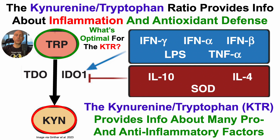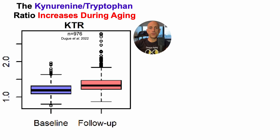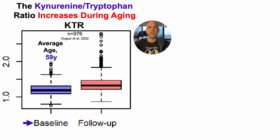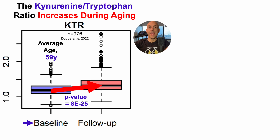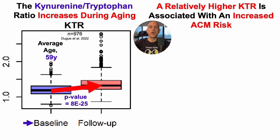With that in mind, what's optimal for the KTR — the kynurenine to tryptophan ratio? This ratio increases during aging. Starting with the baseline visit, this study included people with an average age of 59 years, who then provided blood 11 years later at the follow-up visit, at an average age of 70. There was a significant increase in the KTR going from age 59 to 70.